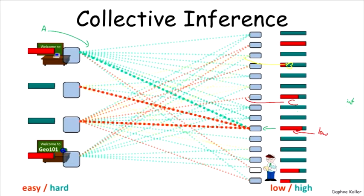This is a toy example, but we'll see later on examples of collective inference where we have multiple interrelated entities — it could be related pixels in an image, or related web pages in a website that point to each other. If we try to label each entity in isolation, we don't get very informed conclusions. But by thinking about how they all relate to each other, we get much stronger, more informed results.